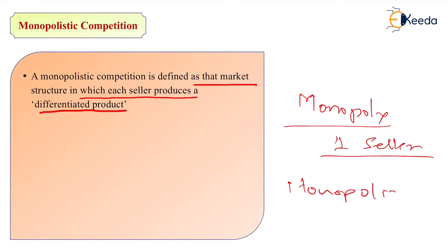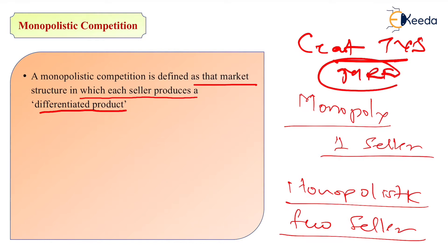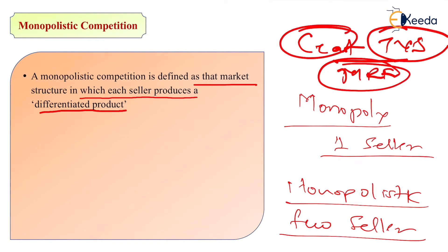When it comes to monopolistic competition, it is a little different — you have only a few sellers, maybe two or three, who are selling differentiated products. Let's take an example of tire companies. We have CEAT, TVS, and MRF. All of these sell tires — the product is the same — but there are differences: some may have extra threads, some may be eligible for long kilometers, some may be more durable against punctures.